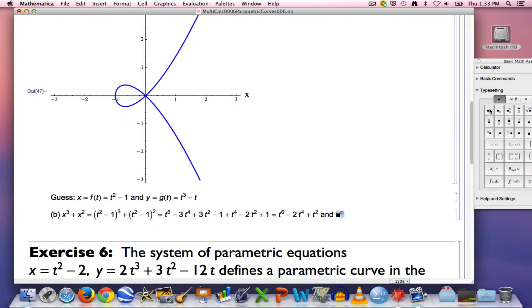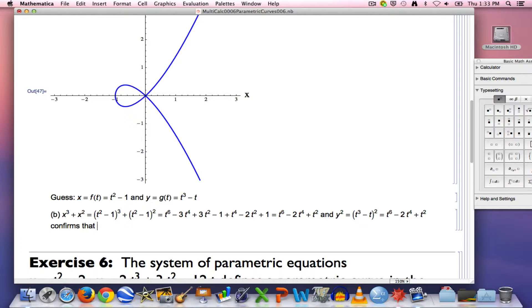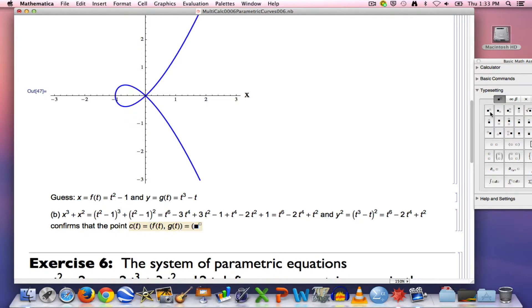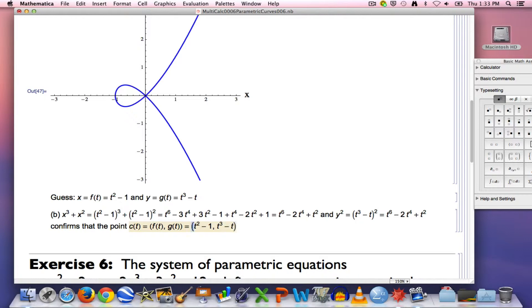How about the other one? How about what happens with y squared when you replace y with t cubed minus t? We need to square that with the FOIL method. We'll get t to the sixth minus two t to the fourth plus t squared. We do indeed get the exact same thing as we got back here when simplified. This confirms that the point c of t equals f of t comma g of t which equals t squared minus one comma t cubed minus t is always on the cubic curve defined by the equation y squared equals x cubed plus x squared.